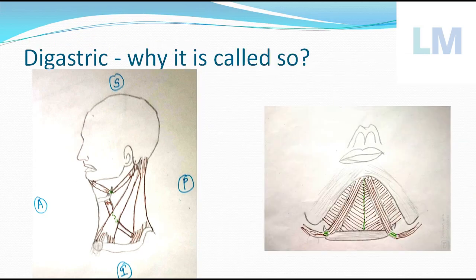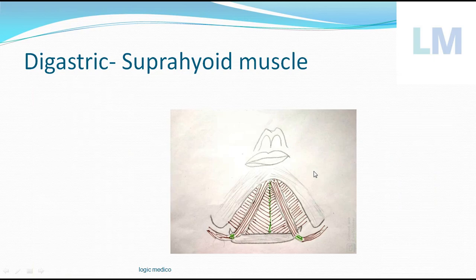It is called digastric because it has got two bellies: the posterior belly and the anterior belly going towards the chin. It is one among the suprahyoid muscles — it belongs to the suprahyoid group of muscles.